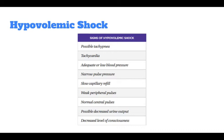In hypovolemic shock, preload to the heart is decreased, though contractility is increased or normal. Likewise, afterload is increased since the vessels have constricted in an attempt to increase blood pressure. The primary means of responding to hypovolemic shock is to provide additional volume. For children, an isotonic crystalloid such as normal saline or lactated Ringer's is the preferred fluid for volume resuscitation.